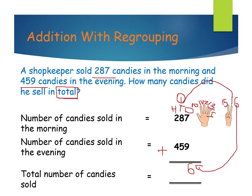Now we are adding the tens place values: 8, 5 and plus 1 carry over. 8 is bigger than 5, so keep 8 in your mind and open 5 fingers. 8 after: 9, 10, 11, 12, 13. What is 8 plus 5? 13. And plus 1 carry over — 13 plus 1? 14.